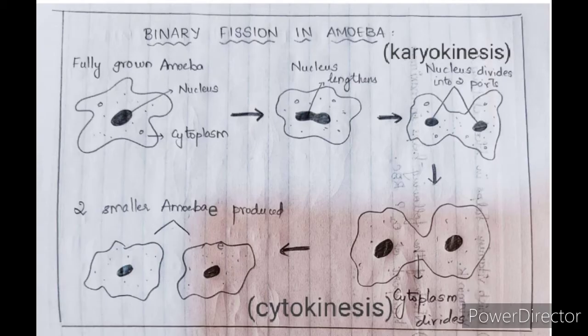Karyokinesis is followed by cytokinesis, which involves constriction of the cytoplasm. The cytoplasm gets constricted, leading to division of the cytoplasm — 'cyto' means cytoplasm, 'kinesis' means division, so this process is called cytokinesis. Finally, two daughter cells are formed, which we call the two daughter amoebae.